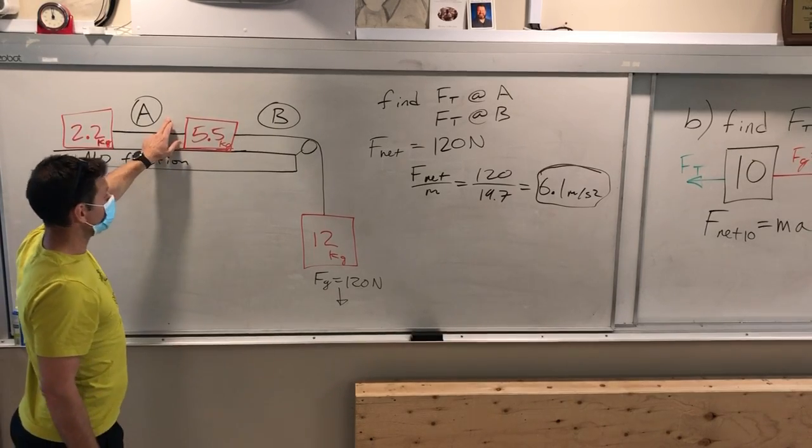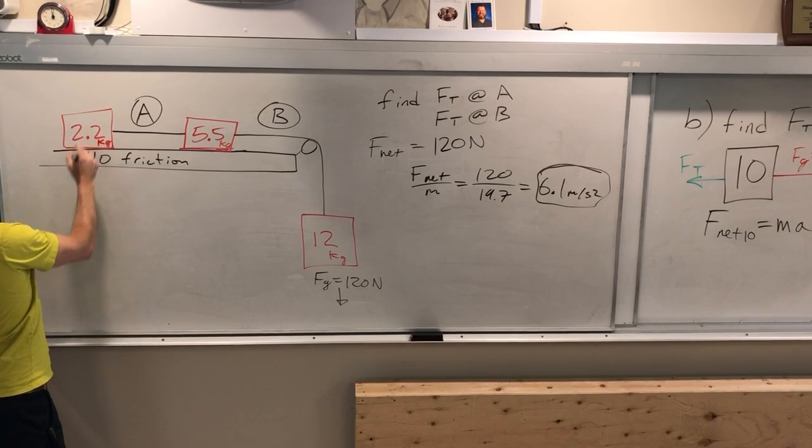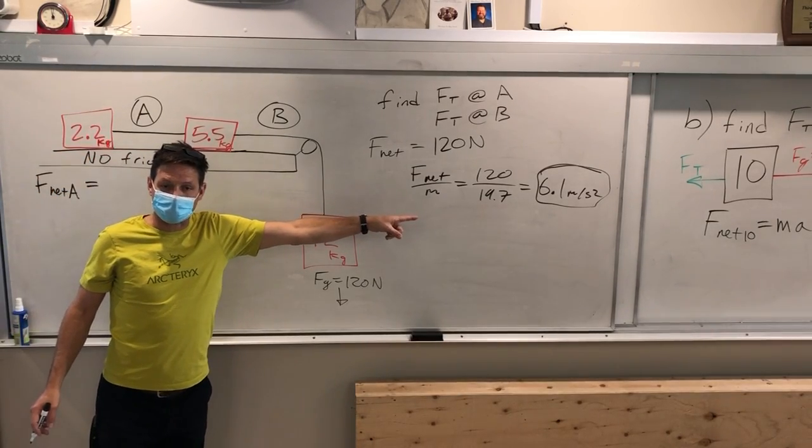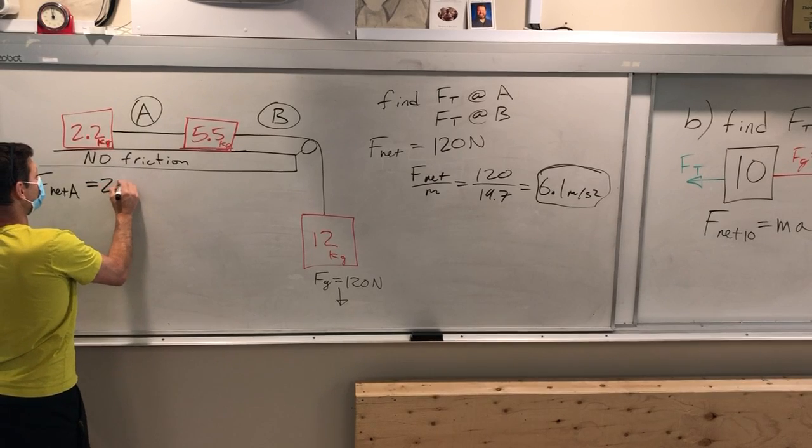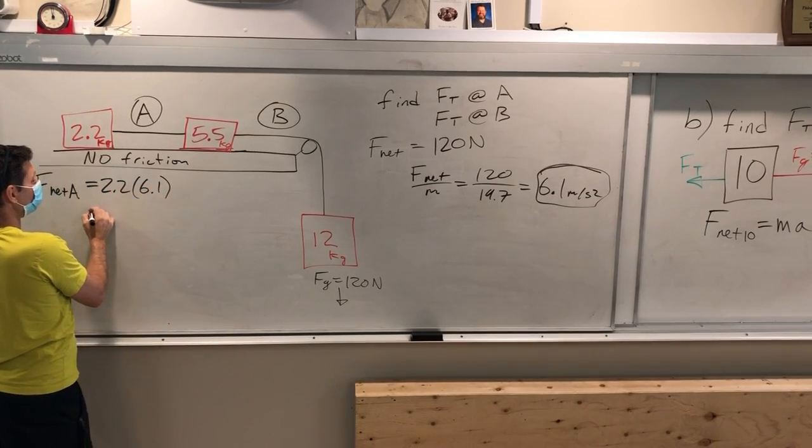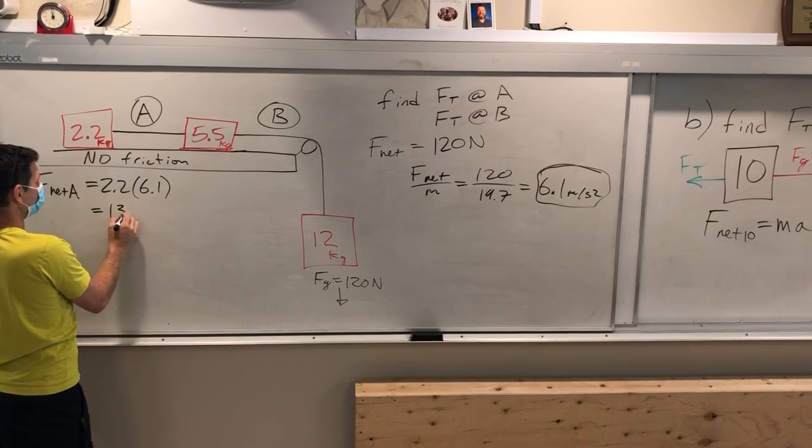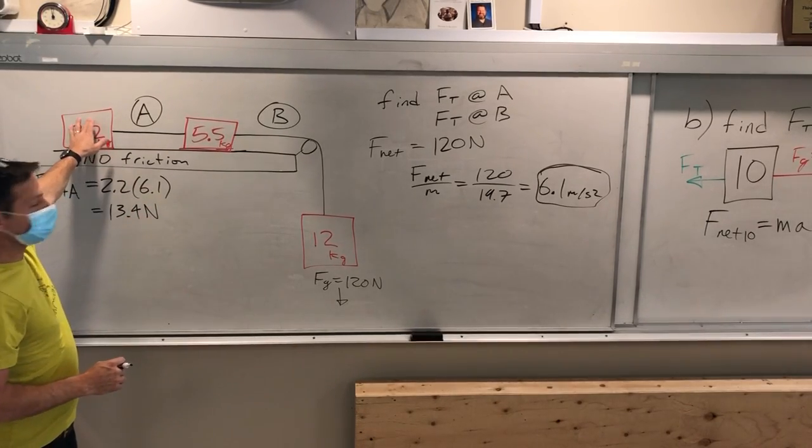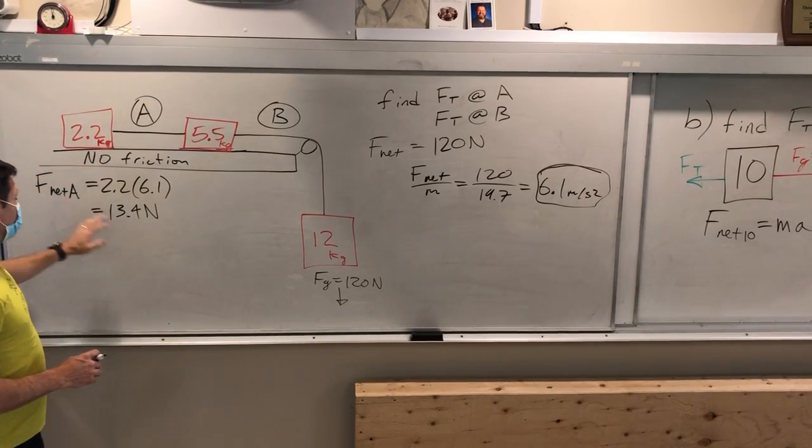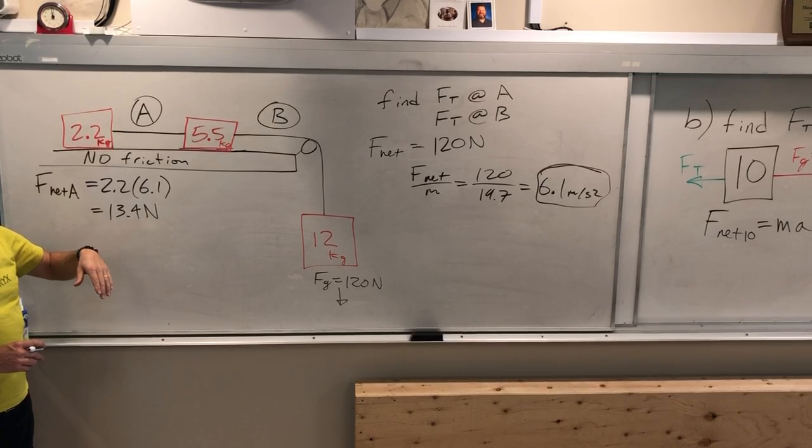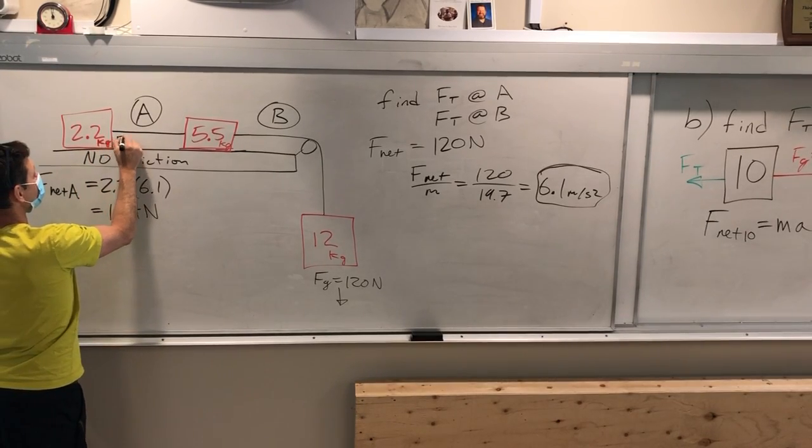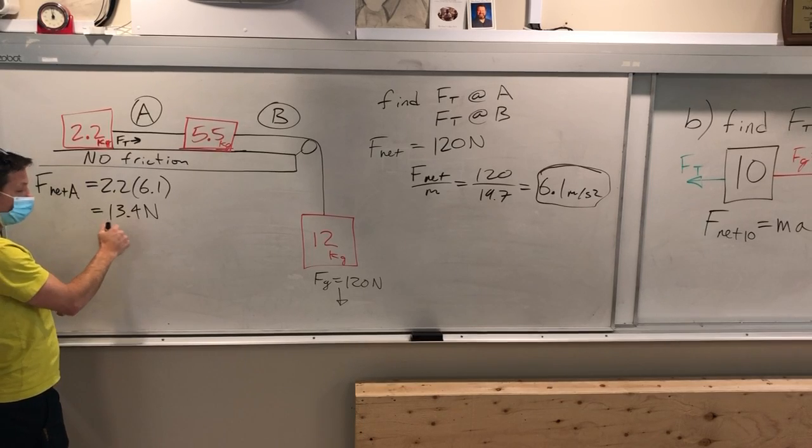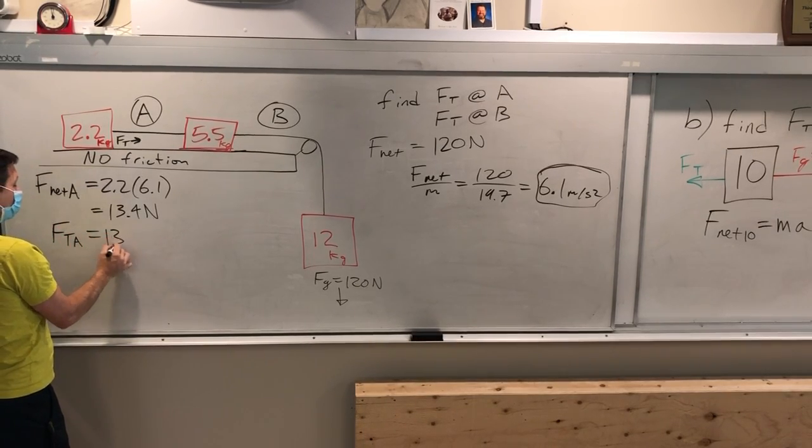So if you want to find the tension in A, now we can say the net force on A is just its mass times the acceleration, because it has to accelerate at that rate. So we go 2.2 times 6.1, and we get about 13.42. Now the great thing about this end block is that there's no friction on it. So the net force on this block is the tension force. The only thing acting here is FT that way. There is no force pulling it back. So the tension force at A is 13.4.